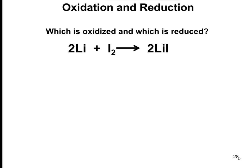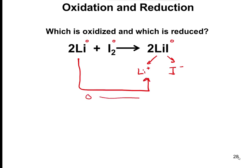Here's a practice example: which is oxidized and which is reduced? 2 Li + I₂ → 2 LiI. Writing the charges: lithium is 0, iodine is 0. LiI is an ionic compound — iodine is a halogen so it's minus 1, and lithium is in group 1 so it's plus 1. Lithium goes from 0 to plus 1, so it loses an electron.